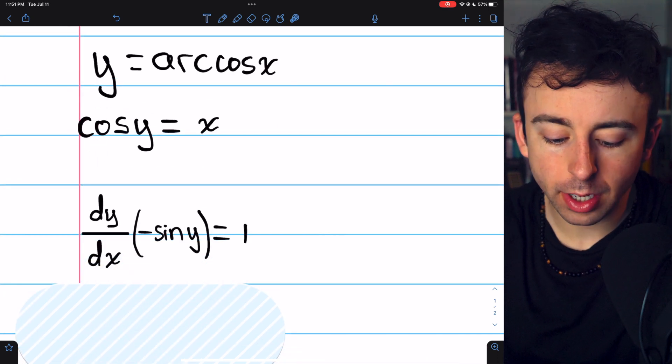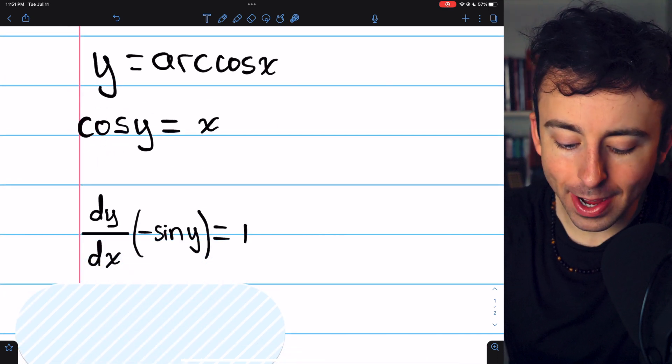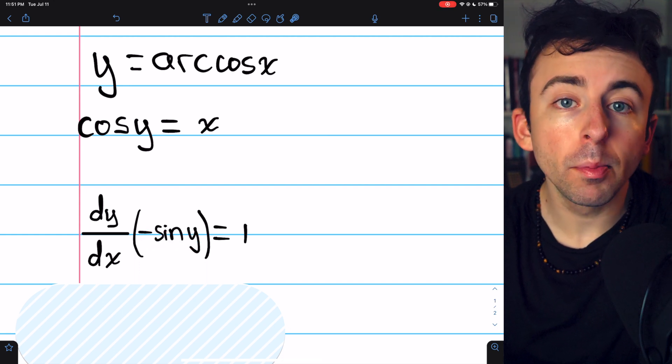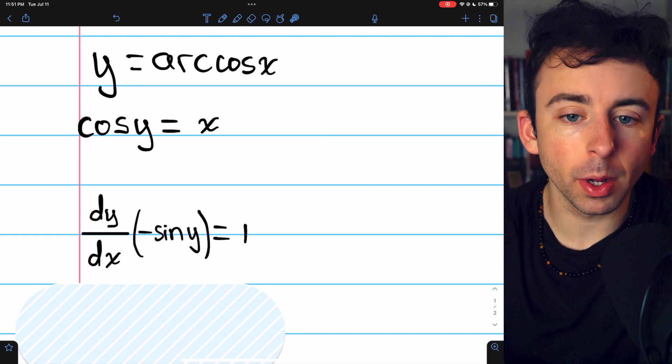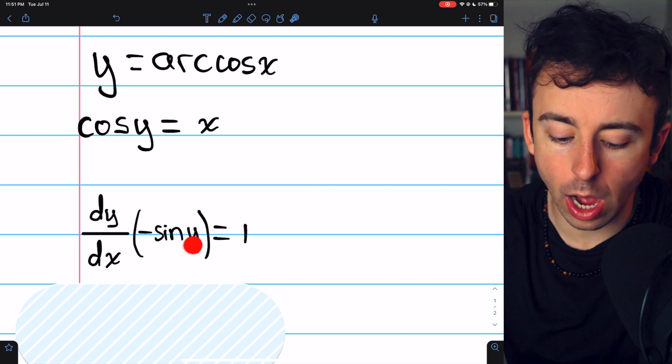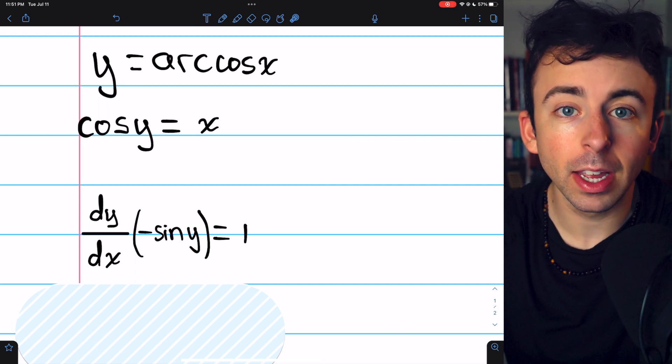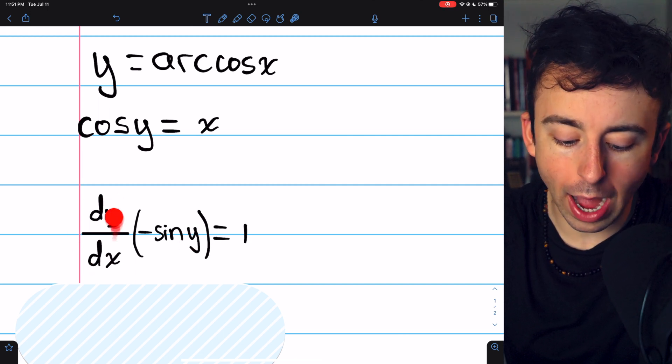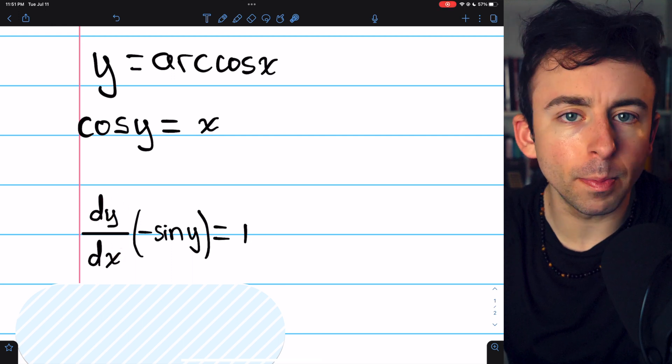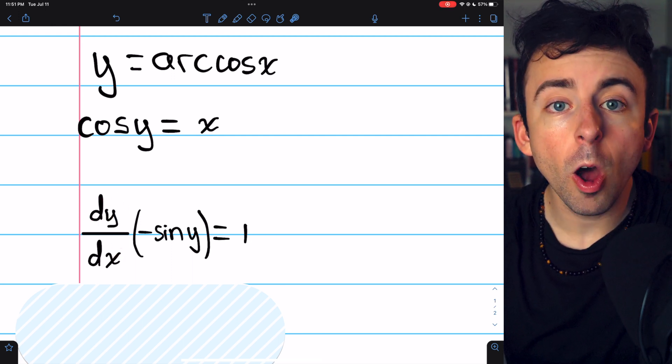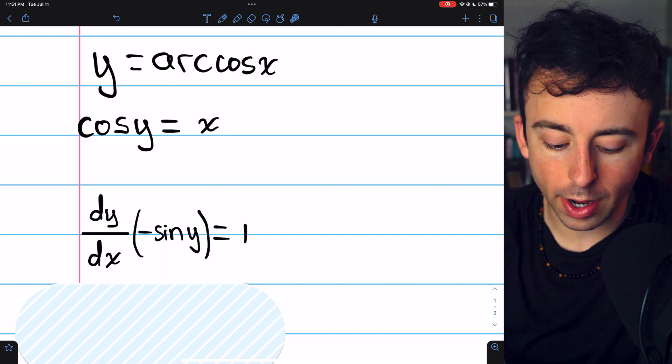Taking the derivative on the left, the derivative of cosine y is negative sine y, but by the chain rule, we also have to multiply by the derivative of y, the inside function. The derivative of y is dy/dx, and of course, that's the piece we're trying to solve for. On the right, the derivative of x is just 1.